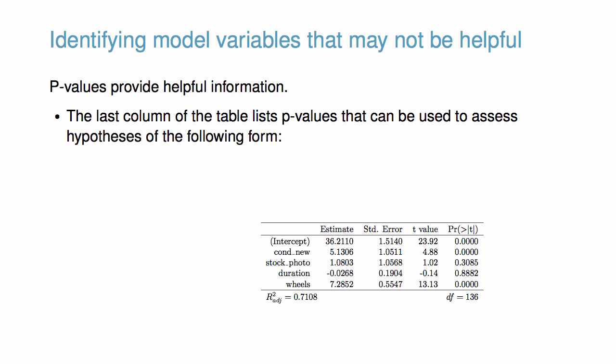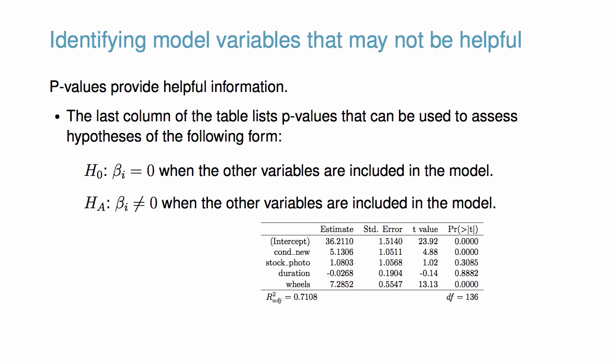The last column of the table lists p-values that can be used to assess hypotheses of the following form. The null hypothesis is that beta_i equals zero when the other variables are included in the model. The alternative hypothesis is that beta_i is not equal to zero when the other variables are included in the model.